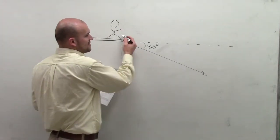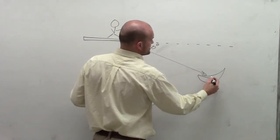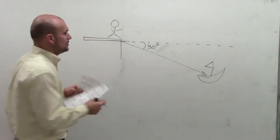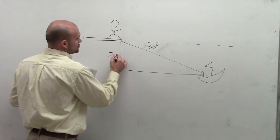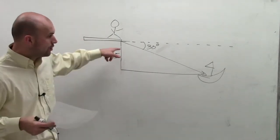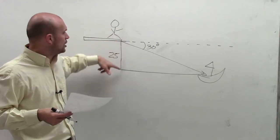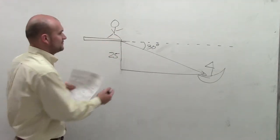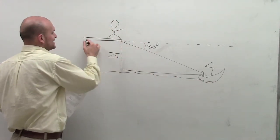From them on the dock, there's an angle of depression going down to this boat. The only thing we know about this boat is that it is 25 feet below. This dock is 25 feet above water level.